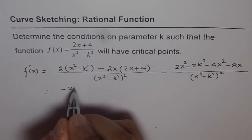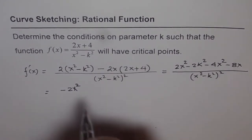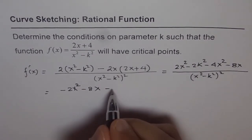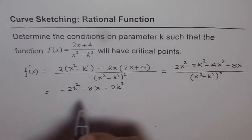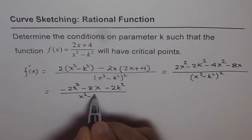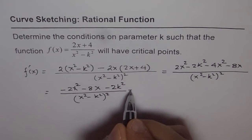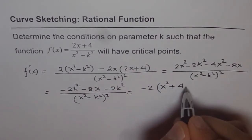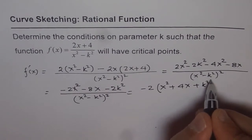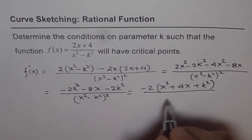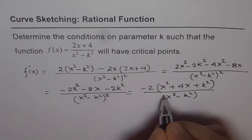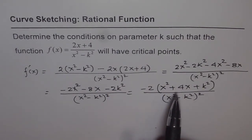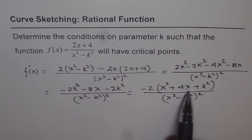We have -2x² - 8x - 2k², divided by (x² - k²)². We can factor out -2, giving us -2(x² + 4x + k²) divided by (x² - k²)². So the numerator of f'(x) is x² + 4x + k².